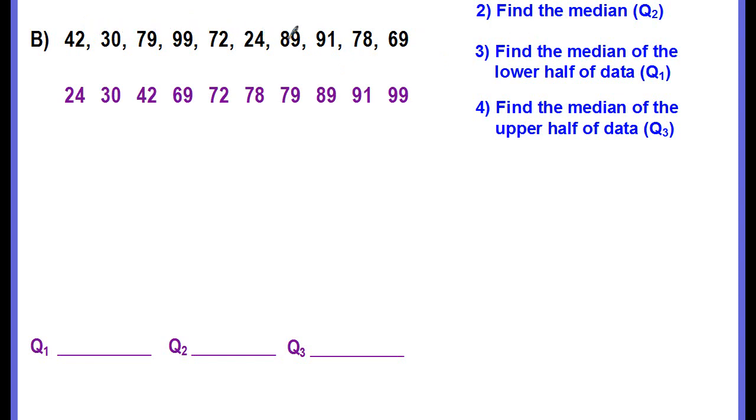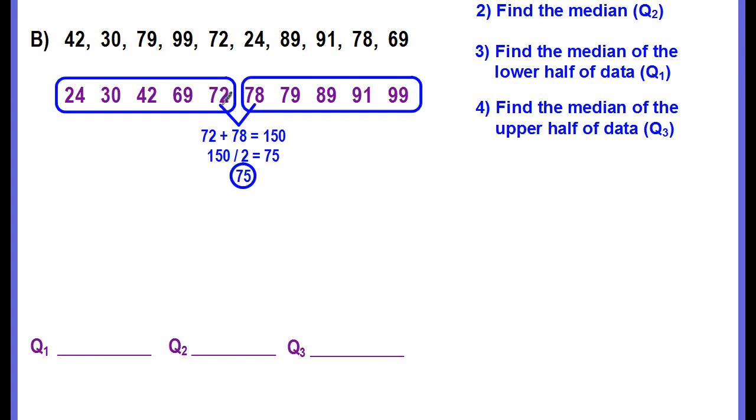And if we divide 10 by 2, we get 5. So to find the median, this is our lower, this is our upper. The median is going to be halfway between 72 and 78. There's not a number here in the middle, so we have to find that number. So add them together. 72 plus 78 is 150. Divide 150 by 2 and we get 75. So the median is 75. The median is also our Q2. So we can go ahead and label that.